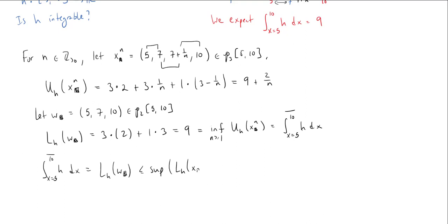But the lower sum is certainly less than or equal to the supremum of all lower sums. If I take a z here and let z range over all possible partitions—I'll use z because we used x above—this supremum is equal to the lower integral.